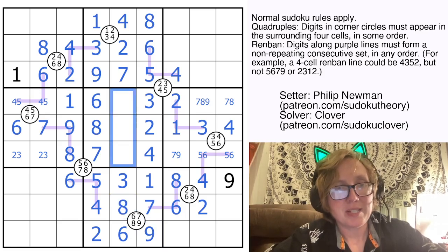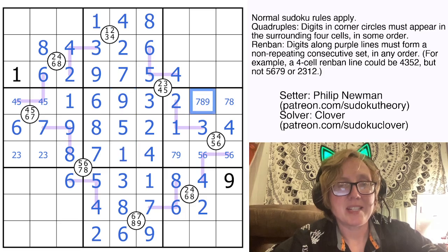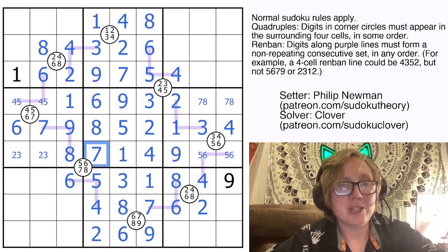So now if we go down this column, we still need a 1, a 5, and a 9. The 5 has to go there, the 9 has to go there, the 1 has to go there. So we can place a 9 in this region now.